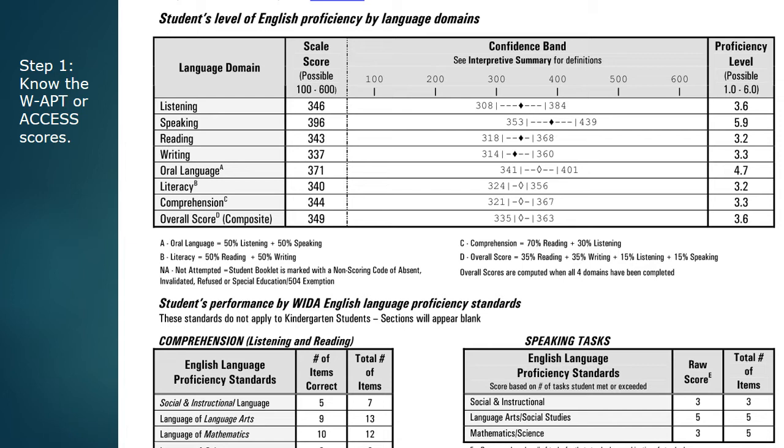The overall composite score is kind of like an average. You want to be careful not to only look at the composite score, because you'll notice that this student has a composite score of 3.6 but is fairly high in oral language and really high in speaking. So when you're considering how language is going to be used on the assessment — whether you're asking a student to speak, write, listen, or read — look at the individual proficiency levels for each task when you begin to modify.